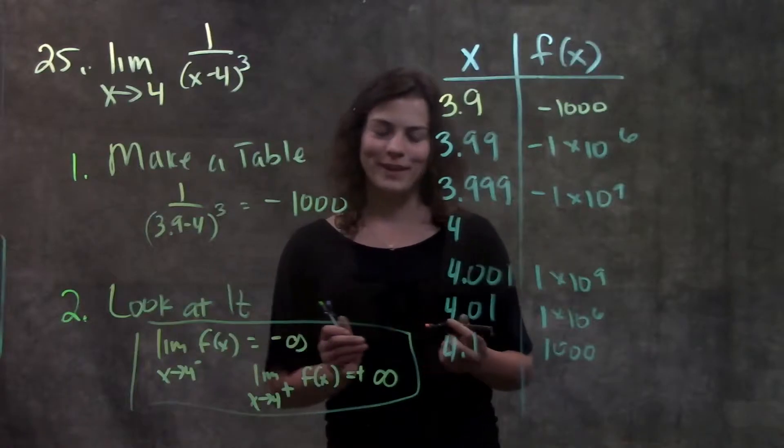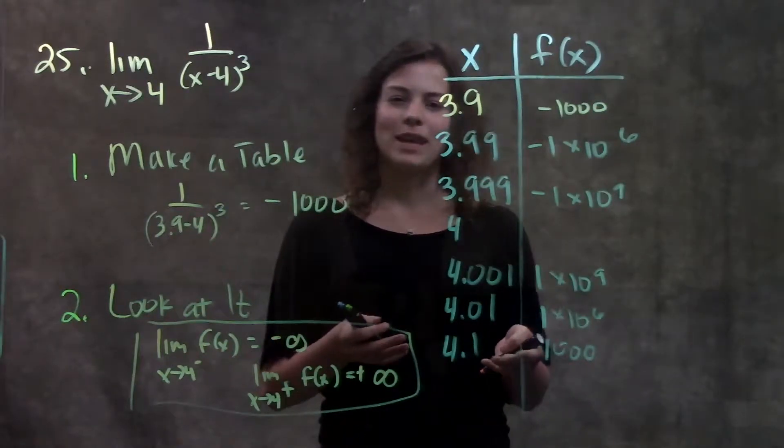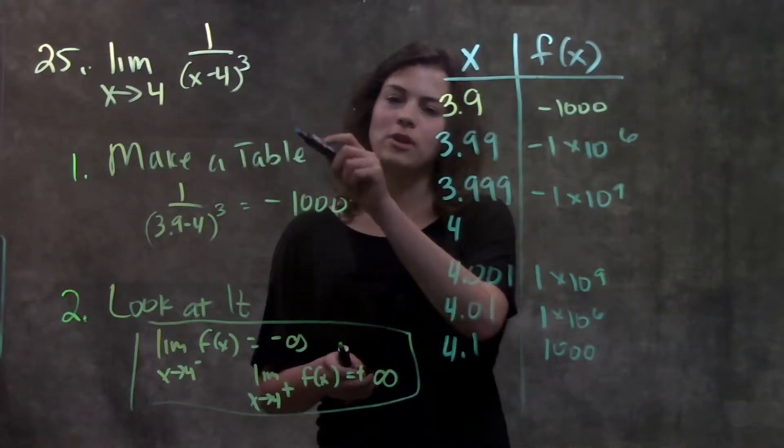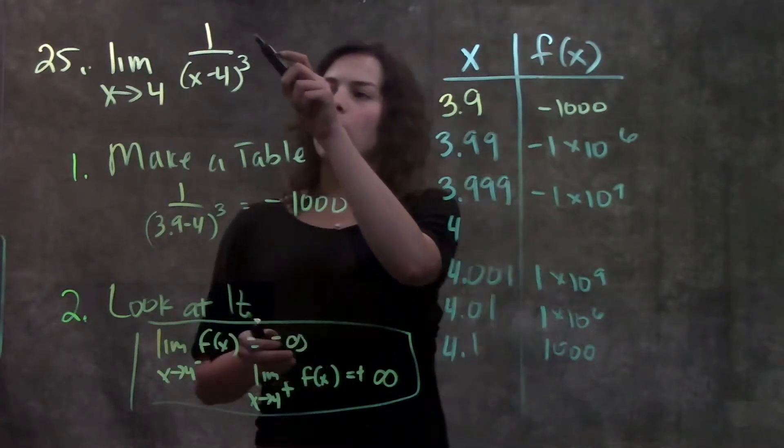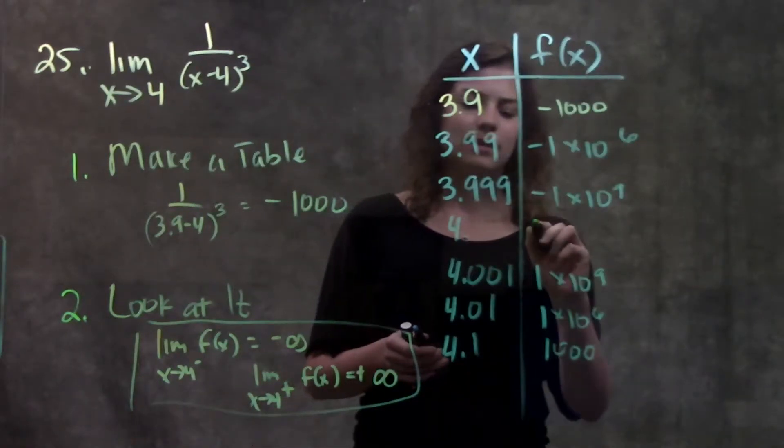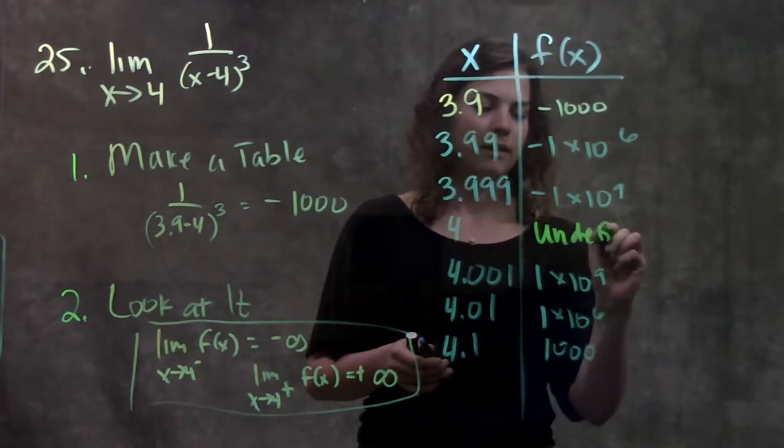But just for fun let's see what would this function look like on a graph. So let's say we were to plug in 4 into our function, what would we get? Well we get 1 over 4 minus 4 cubed. That's 1 over 0 cubed. That's undefined.